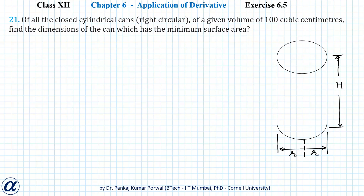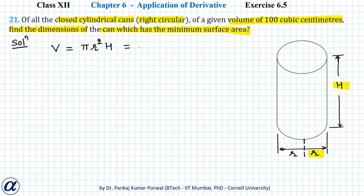In this question we are given a closed cylindrical can which is right circular and has a volume of 100 cubic centimeters. We want to find the dimensions of the can which has minimum surface area. We are given a right circular cylinder with radius of the base r and height h, and the volume of this cylinder will be π r² h, which equals 100 cubic centimeters.